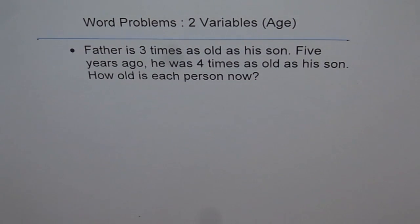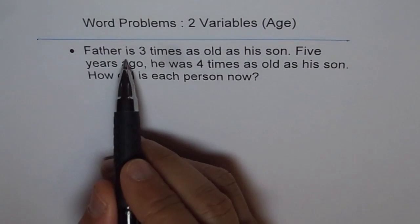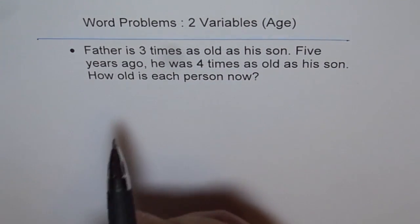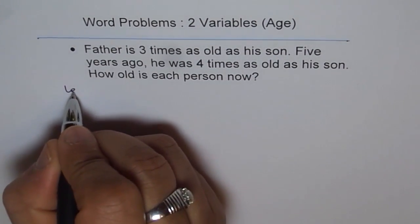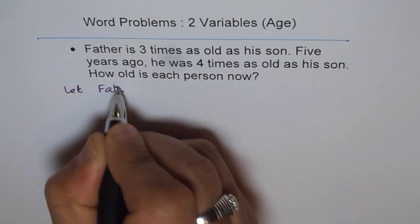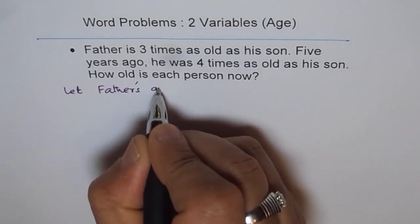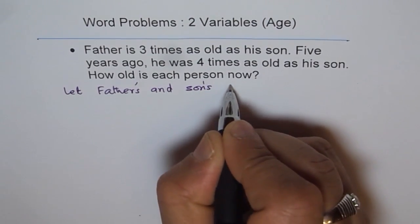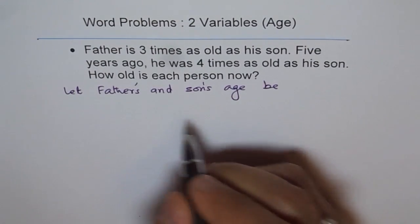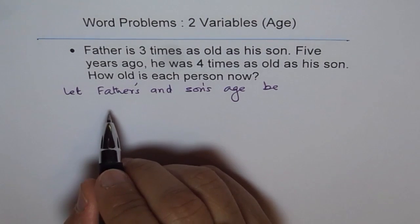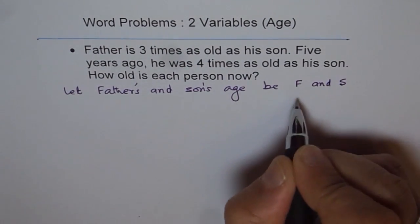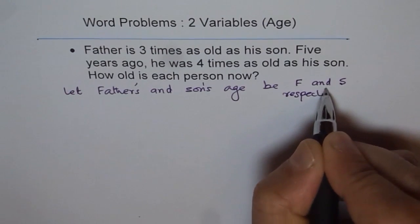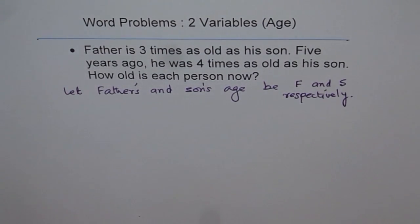In this problem, let's first define our variables. Father is three times as old as his son, so we are talking about two persons — father and son — and about their age. Let father's and son's age be f and s respectively. That is how we have defined our variables — the first step.